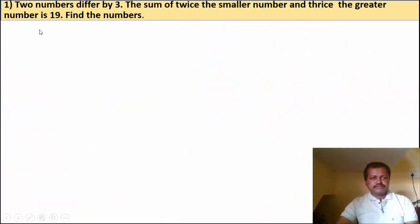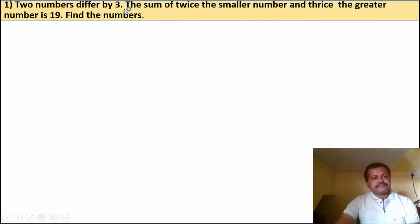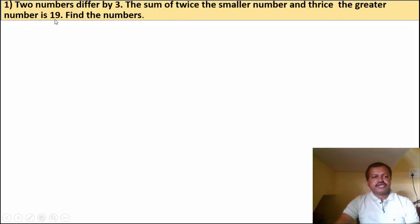First example: Two numbers differ by 3. The sum of twice the smaller number and thrice the greater number is 19. Find the numbers. The sum of twice the smaller number and thrice the greater number — their sum is 19.